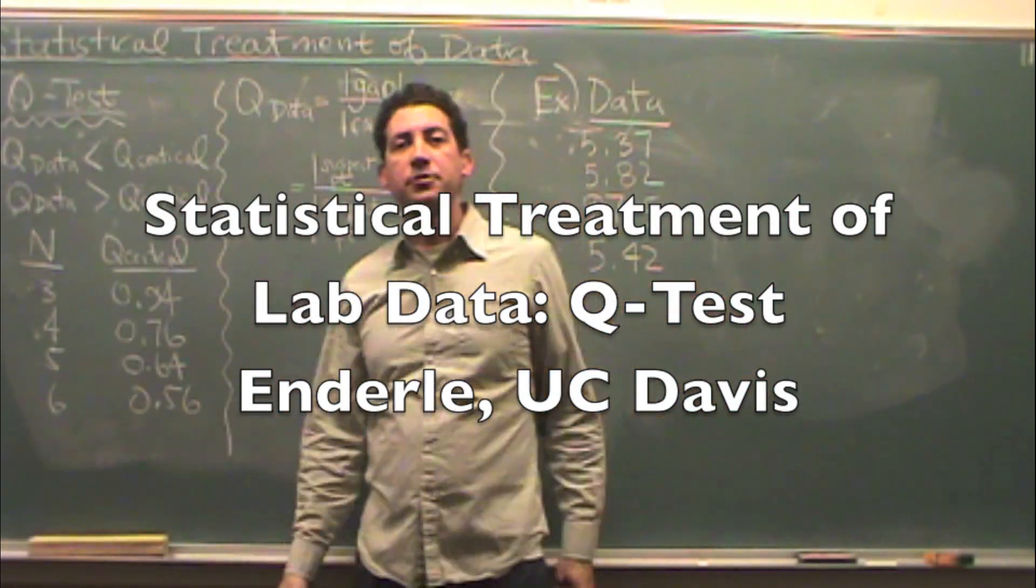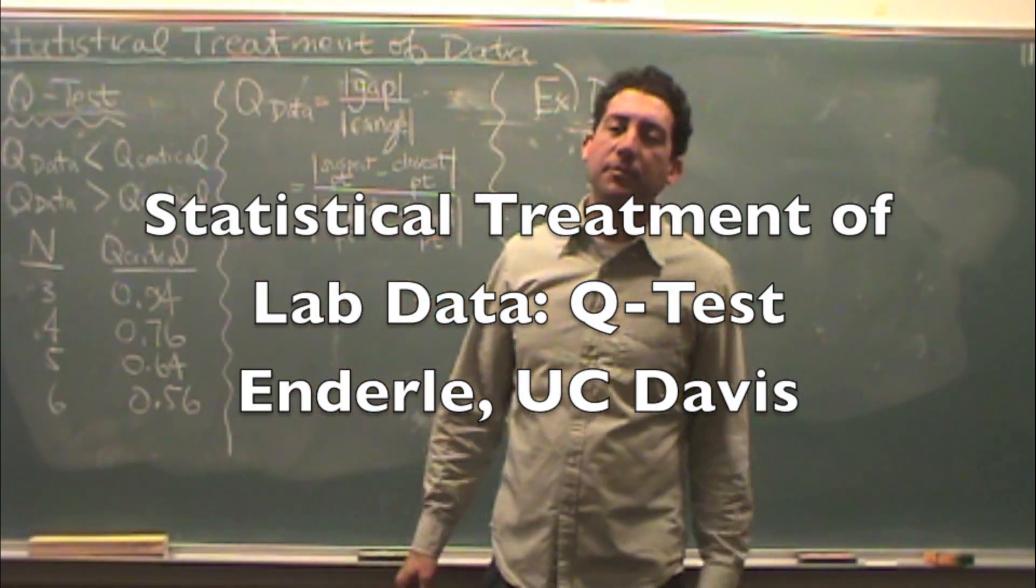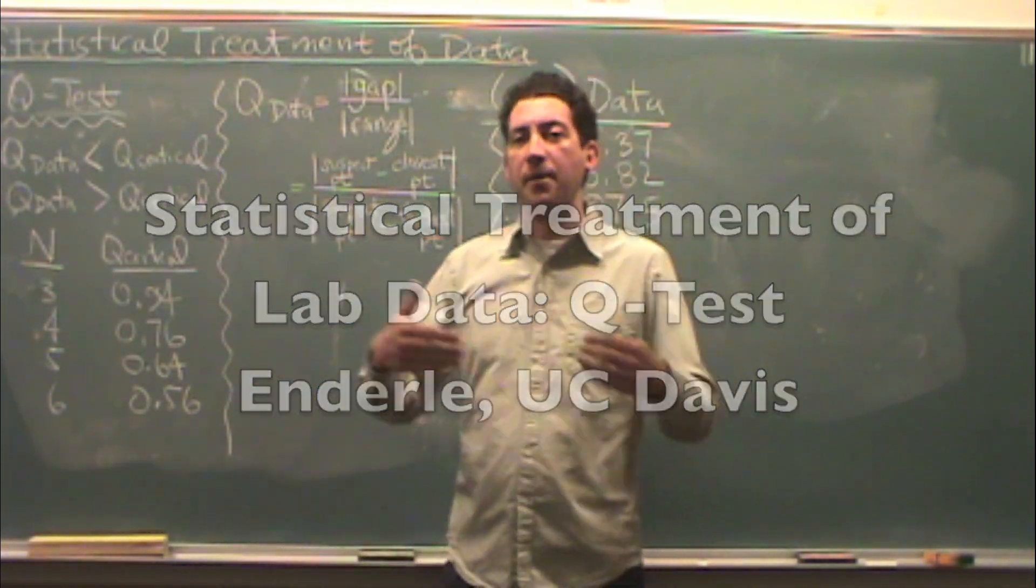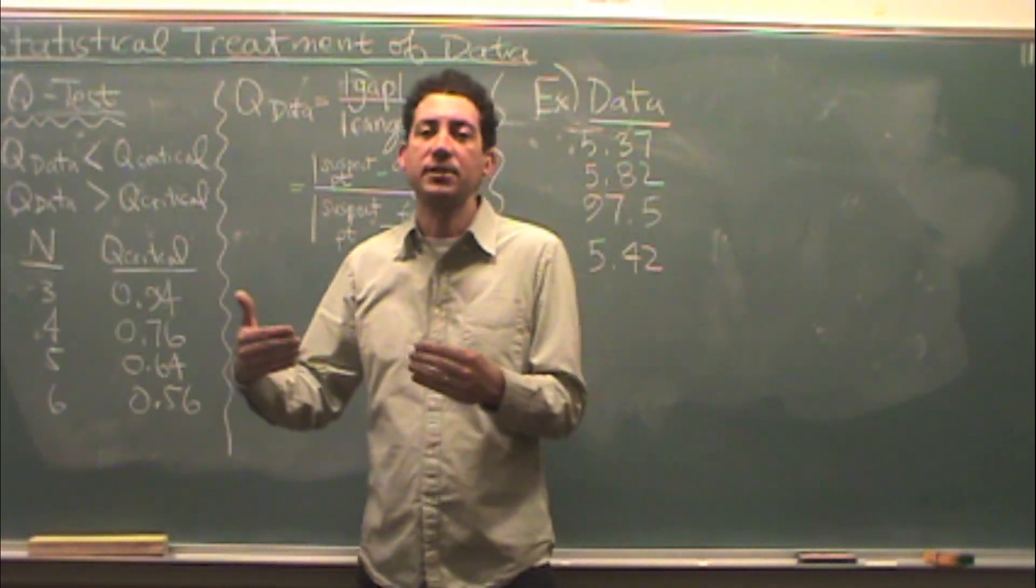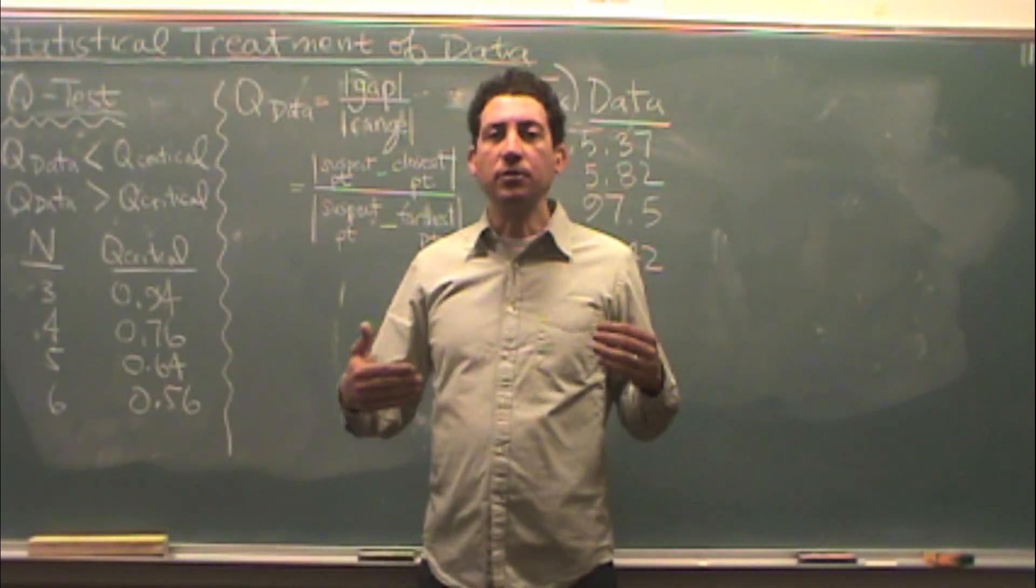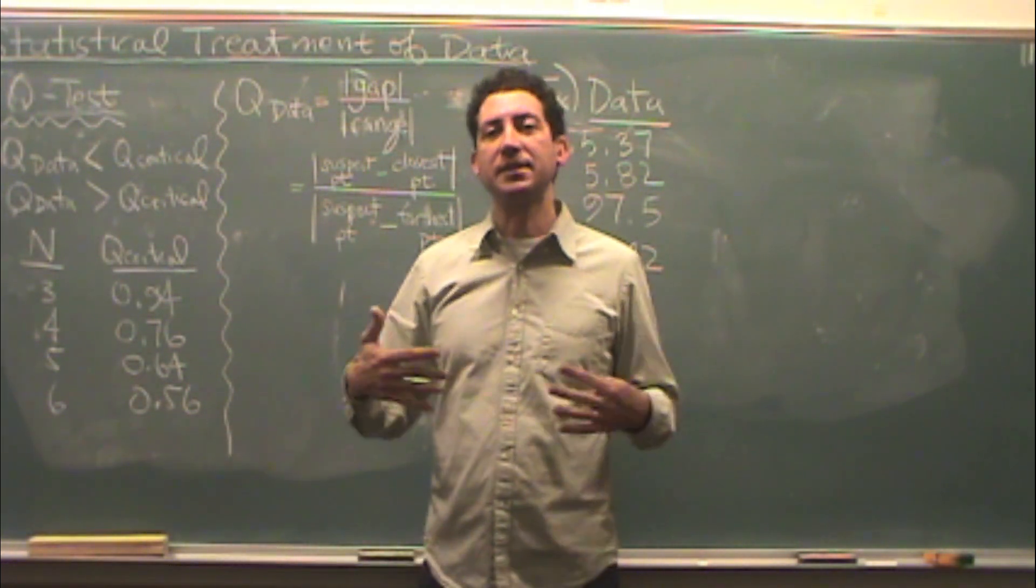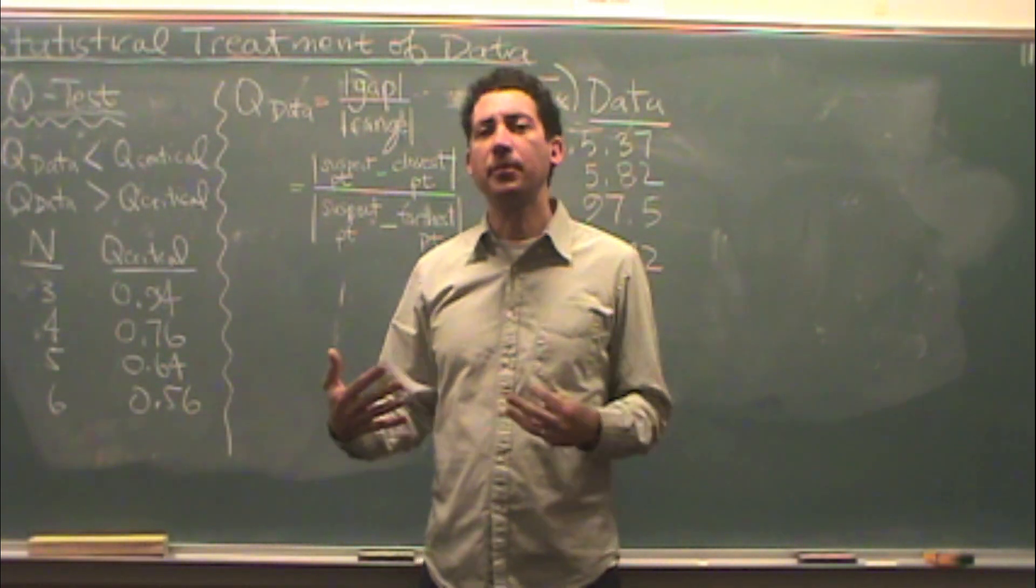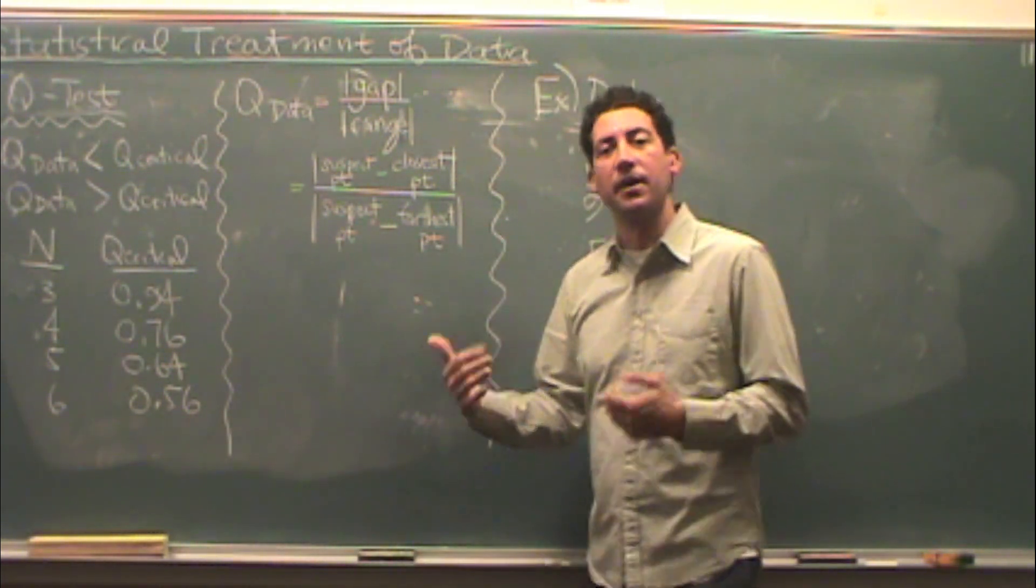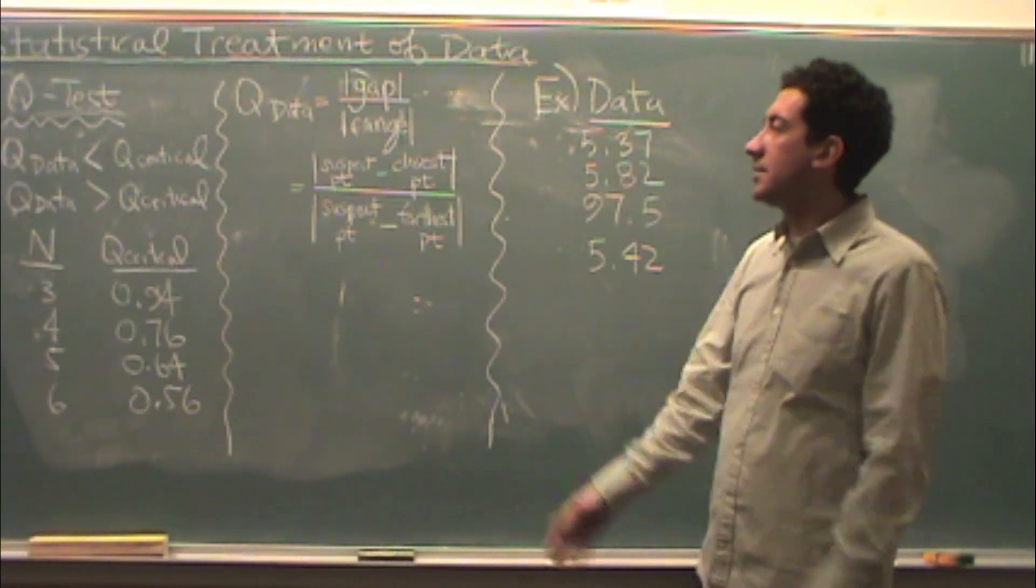We're continuing our statistical treatment of data by looking at something called the Q-Test. The Q-Test is a way to look at bad data and see if you've actually collected a bad data point. We use this whenever we have some point in suspect that we're a little bit unsure about. There's actually a way to statistically treat that - the Q-Test.